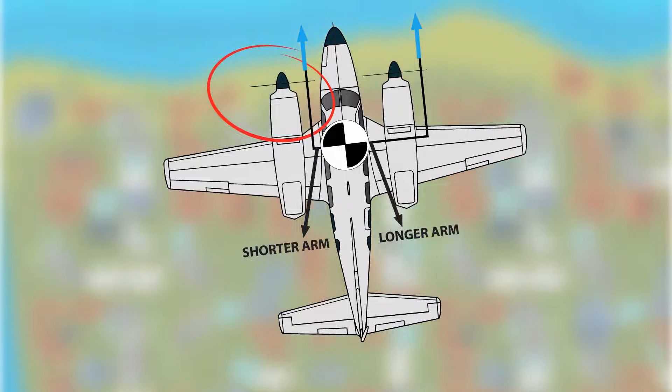Because of a longer arm on the right engine's descending blade, compared to the left engine, this makes the failure of the left engine more critical due to the reduced controllability.